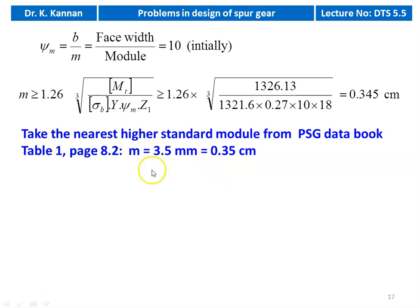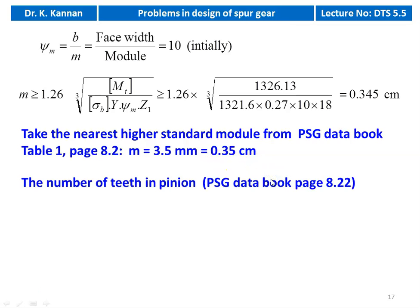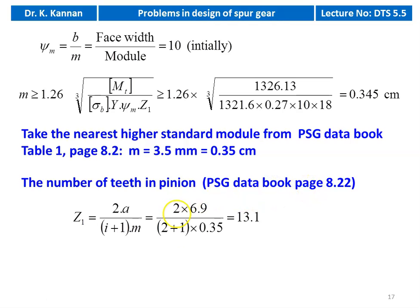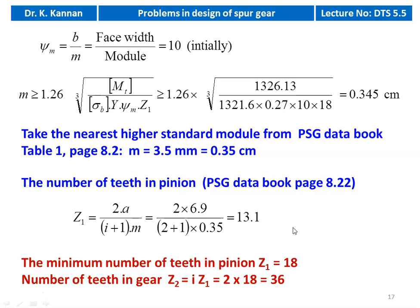Take the next higher standard module from page 8.2, table 1: 3.5 mm (0.35 cm). Calculated value was 0.345 cm, so we take 0.35 cm. Minimum number of teeth in pinion: Z1 = 2A / [(i + 1) × m] = 2 × 6.9 / [(2 + 1) × 0.35] = 13.1. Since minimum is 18, take Z1 = 18. Number of teeth on gear Z2 = i × Z1 = 2 × 18 = 36.